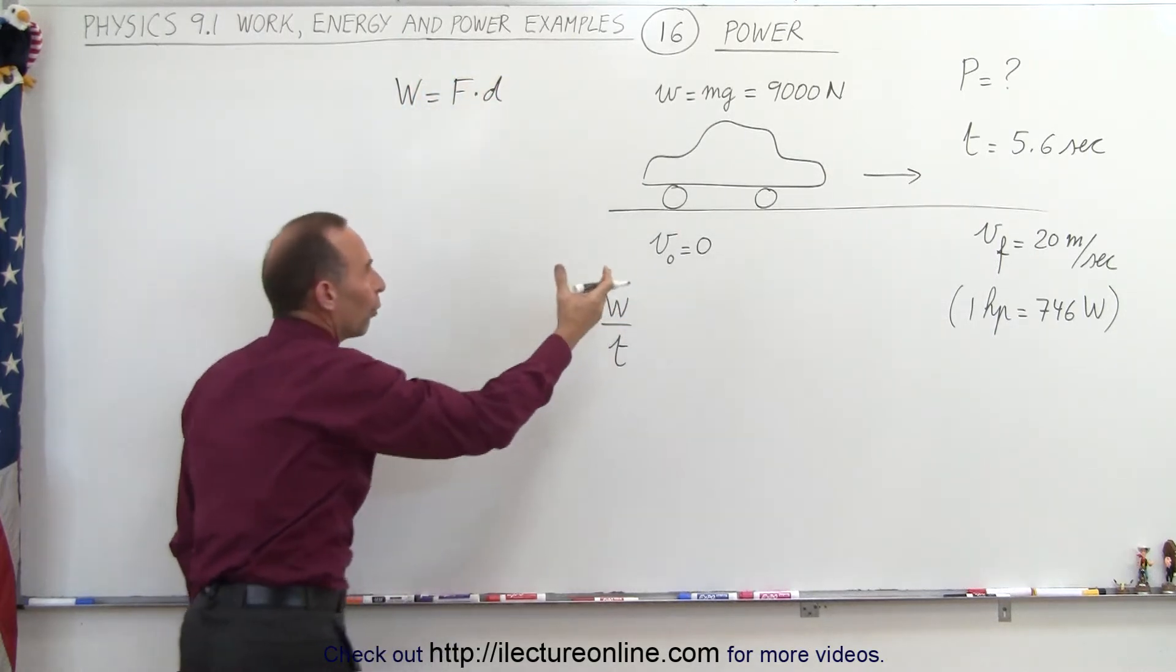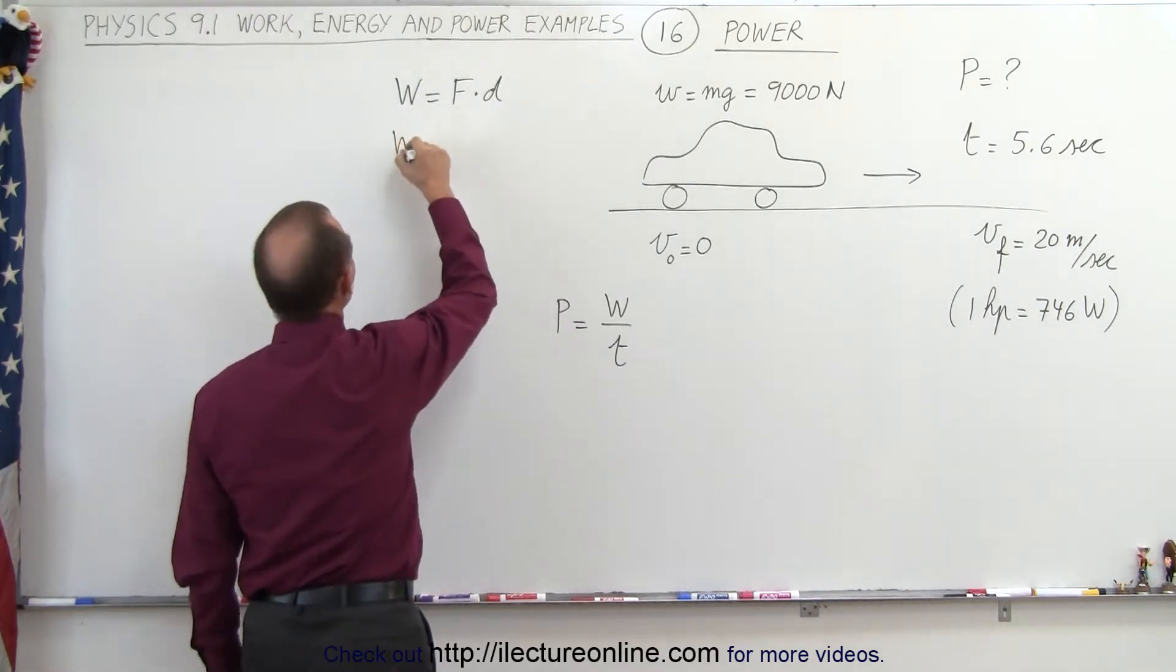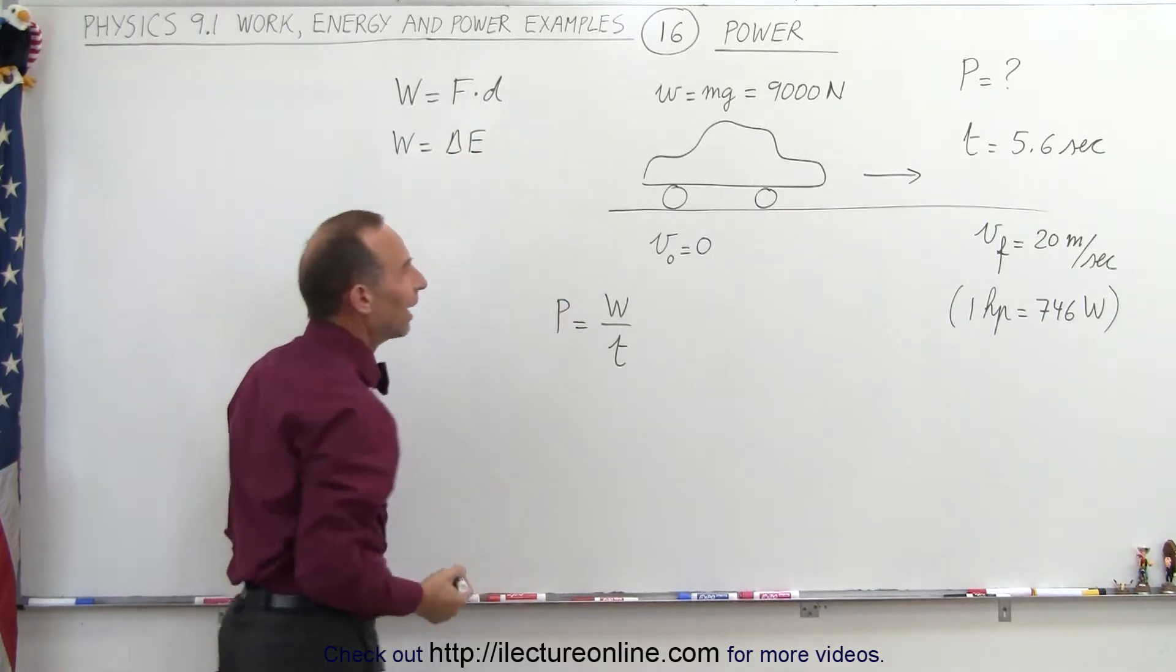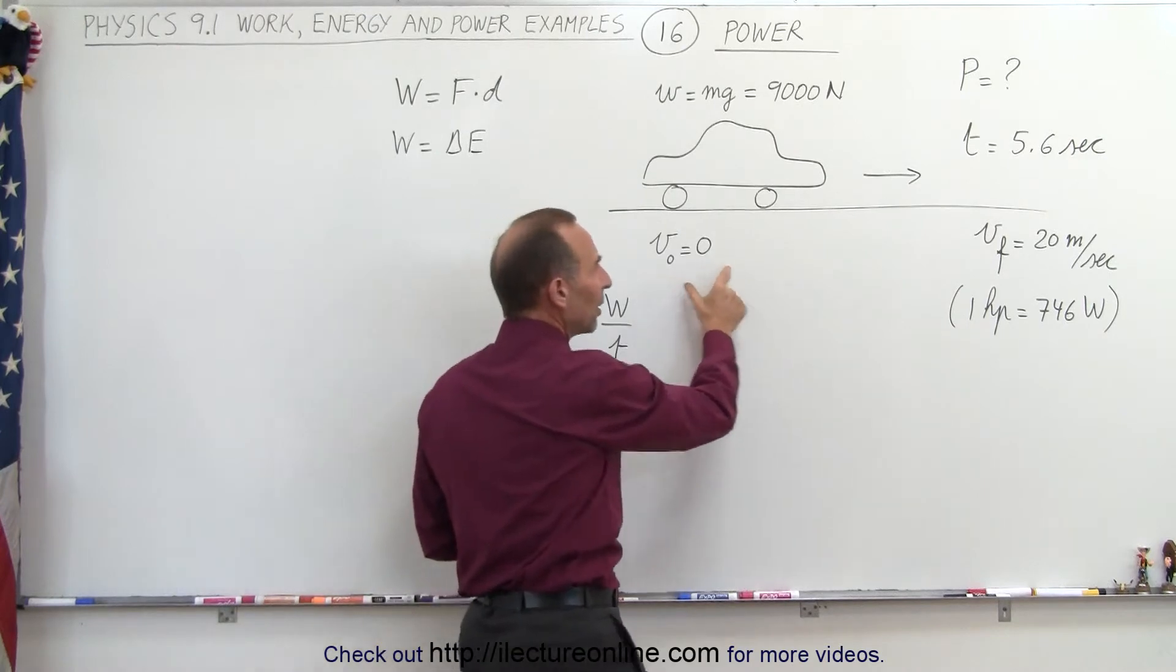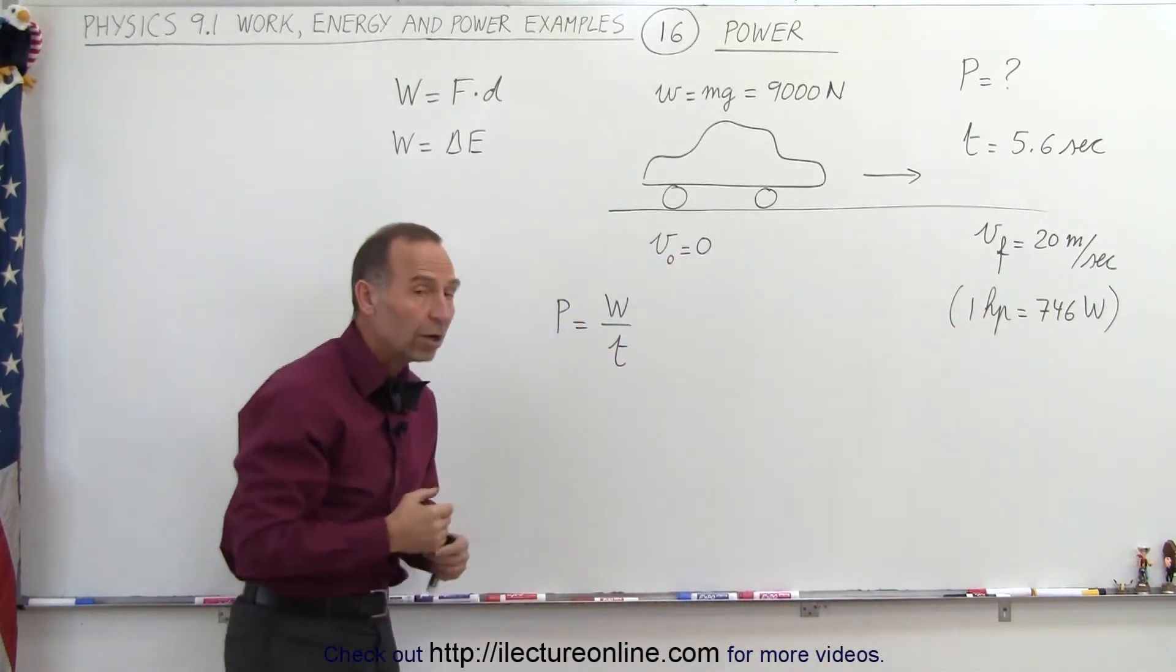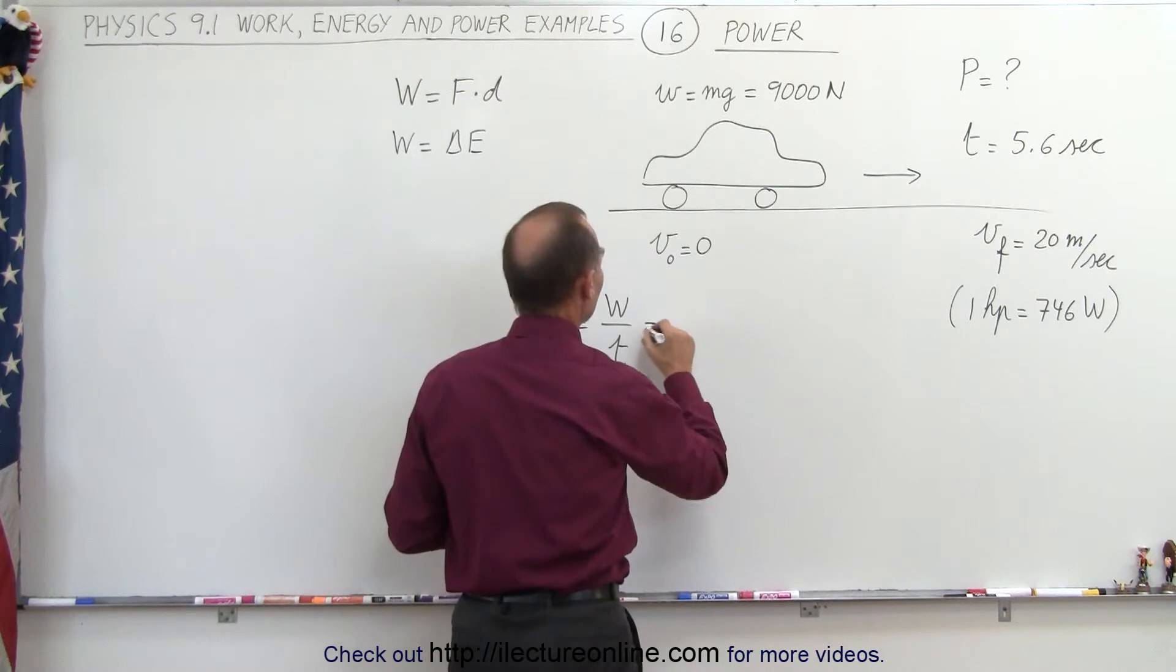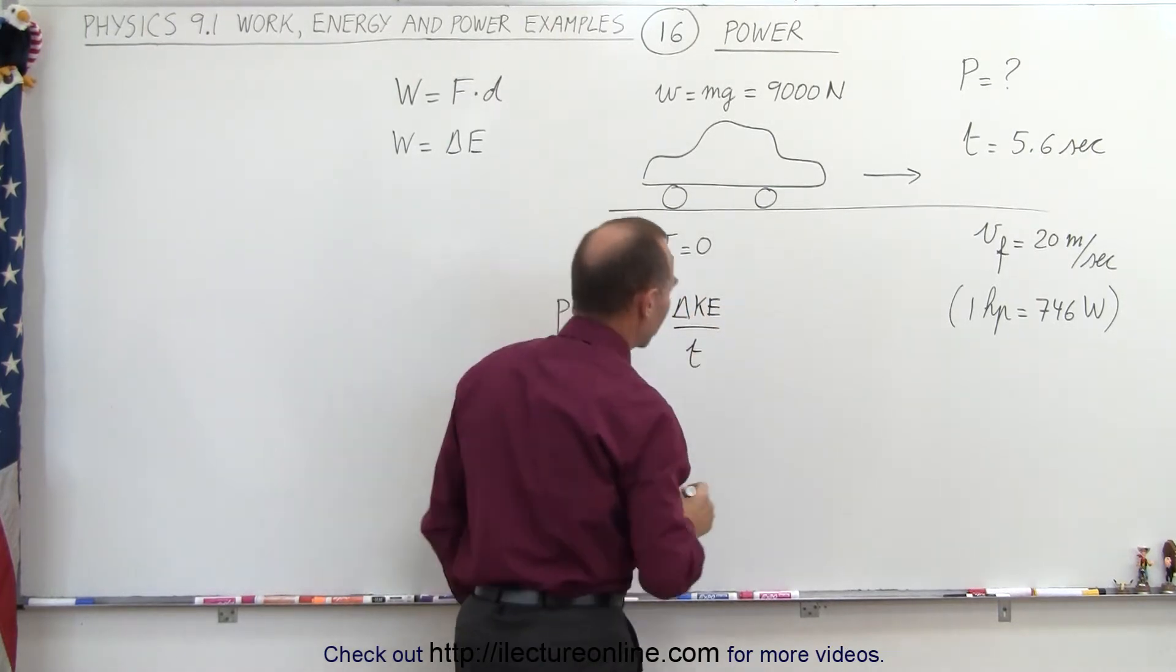We're not given the force or distance, but work can also be defined as being the change in energy. We are given that because we start with a velocity of zero and end up with a velocity of 20 meters per second. Knowing the mass of the car, we should be able to figure out the kinetic energy change of the car. So this is equal to the change in kinetic energy divided by the time that it took.